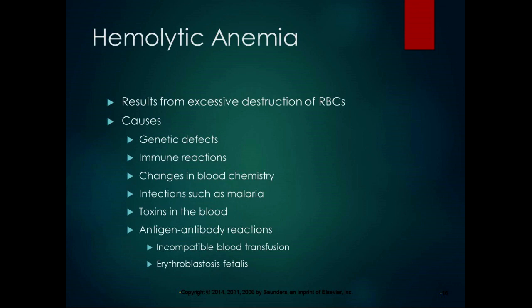Hemolytic anemia results from excessive destruction of red blood cells. Causes include genetic defects, immune reactions, changes in blood chemistry, infections such as malaria, toxins in the blood, and antigen-antibody reactions such as incompatible blood transfusion or erythroblastosis fetalis — where the mother and fetus have incompatible Rh factors.